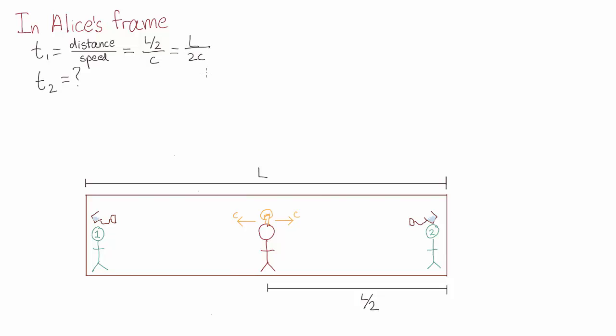So the time taken in between Alice turning on the light and the friend being dunked is l over 2c. And the case is exactly the same for friend 2.